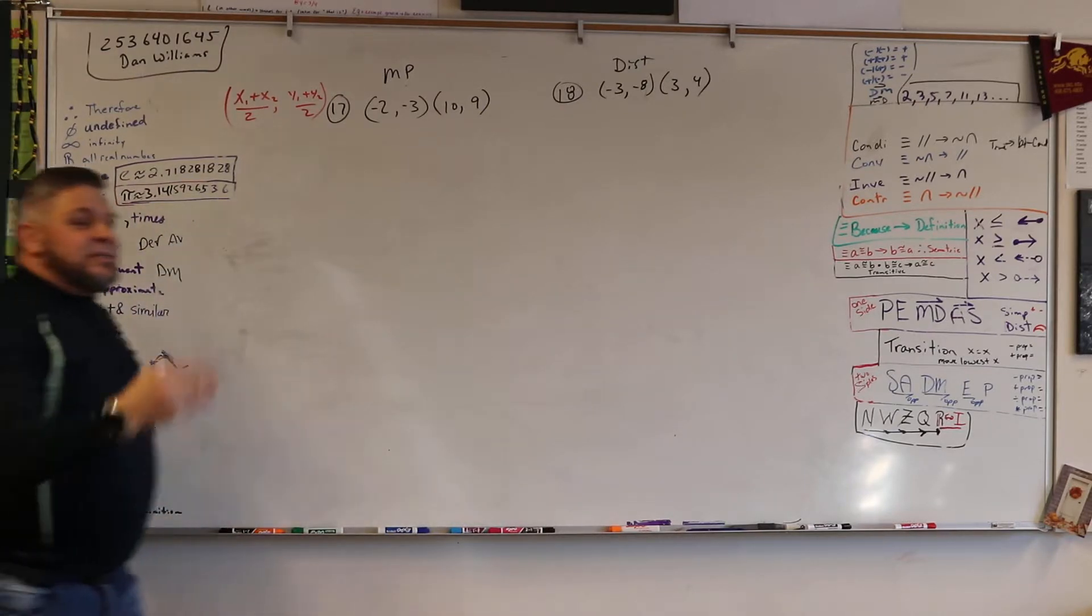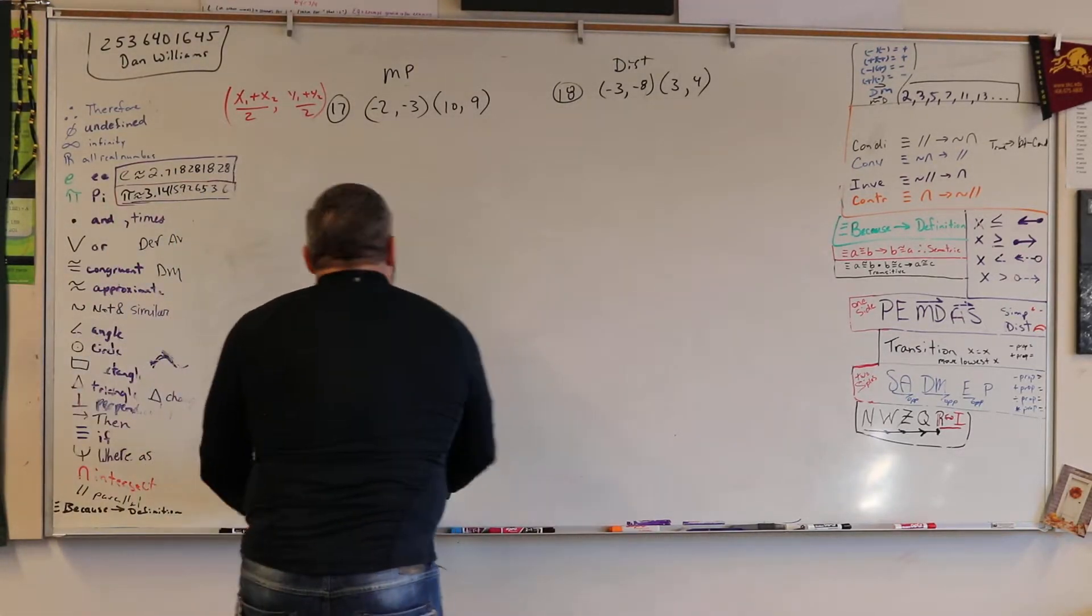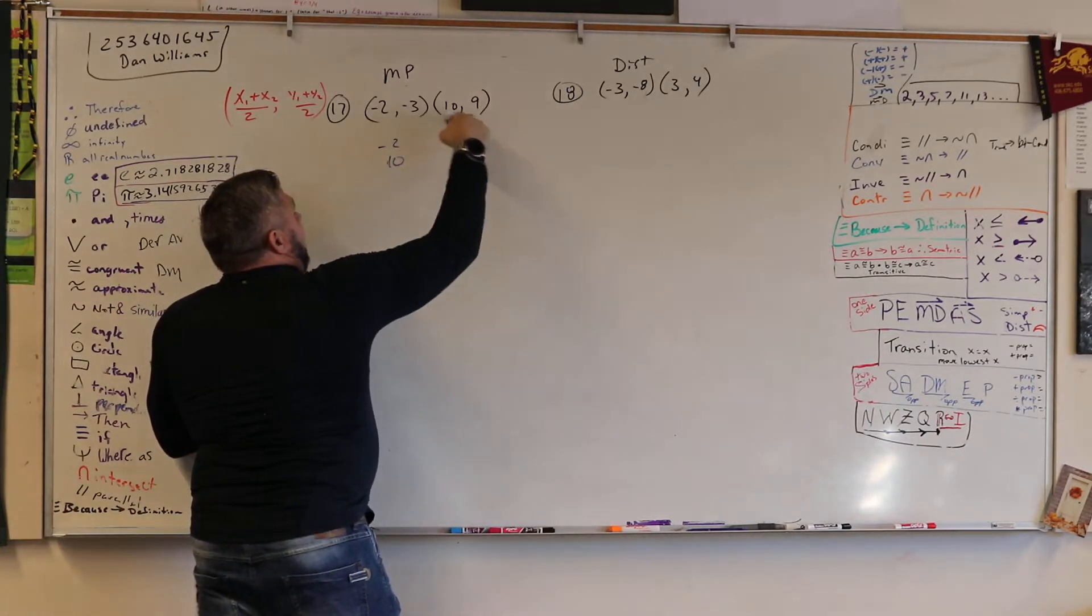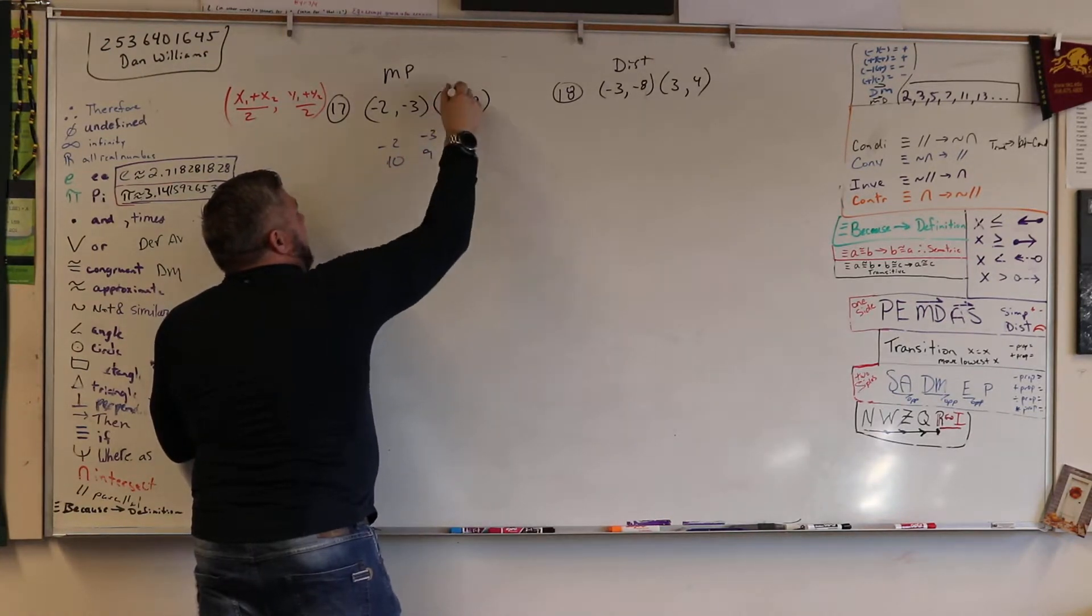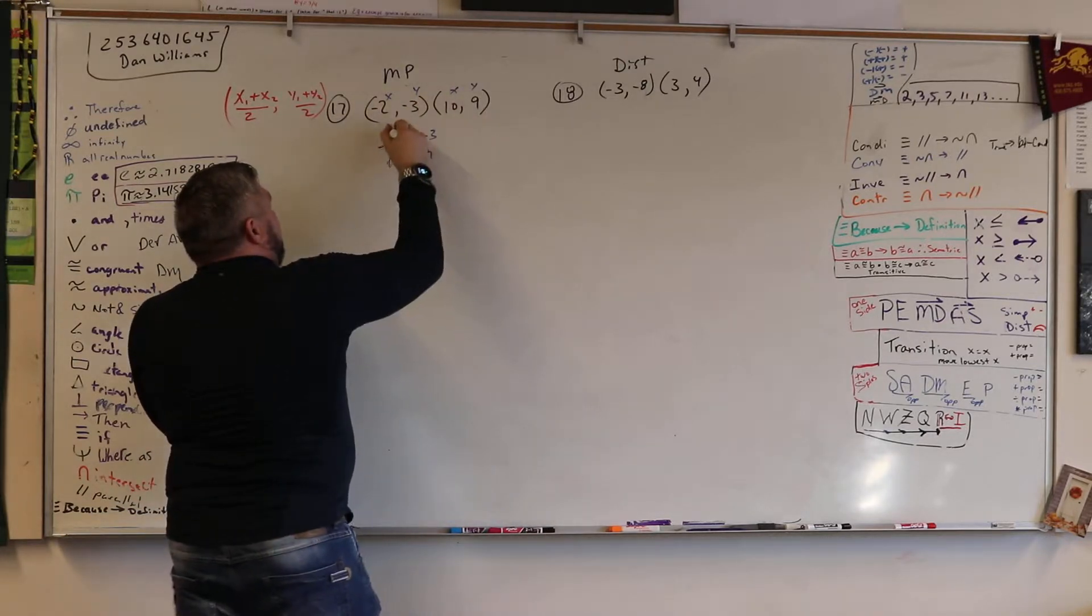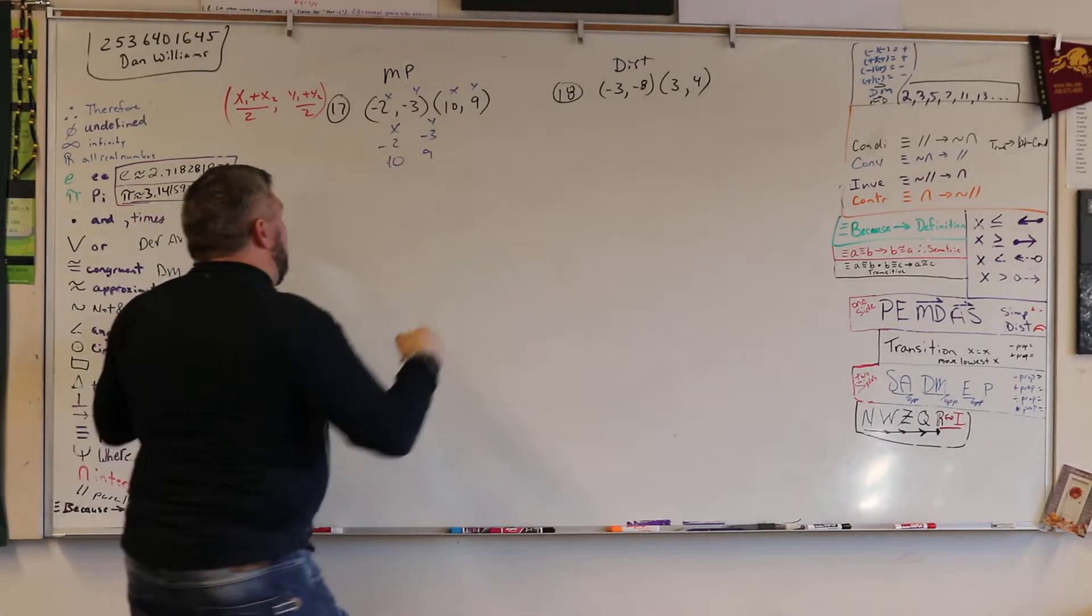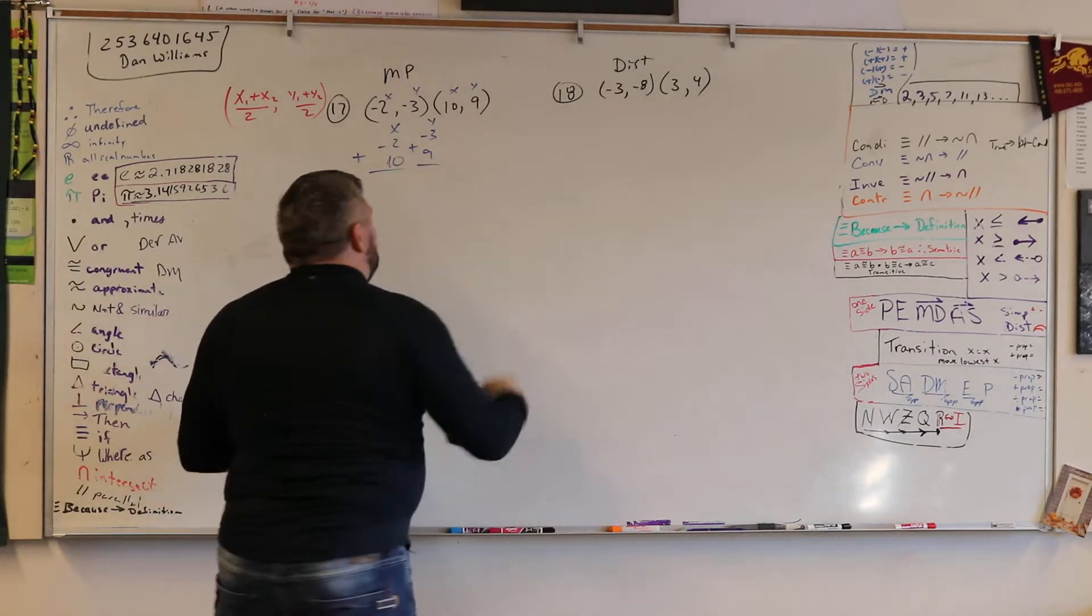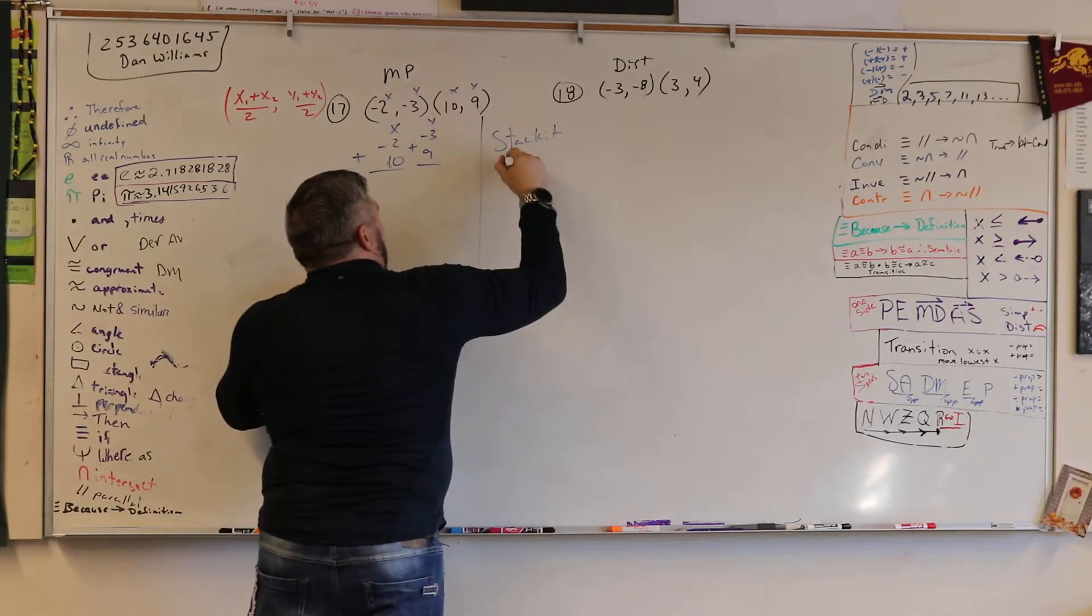Or you can stack it, stack it, and add it, right? Stack it, meaning negative 2 over 10 and negative 3 over 9, right? I'm just stacking the X's over the X's and the Y's over the Y's. So these are X's and these are Y's. So when you stack it and add it, okay? So stack it, add it...